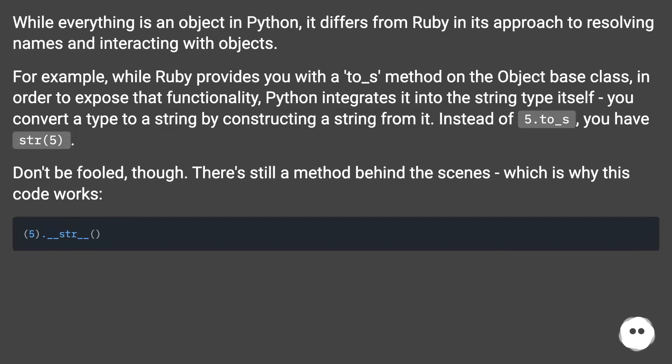In Python, it differs from Ruby in its approach to resolving names and interacting with objects. For example, while Ruby provides you with a to_s method on the object base class, in order to expose that functionality, Python integrates it into the string type itself. You convert a type to a string by constructing a string from it. Instead of 5.to_s, you have str(5).